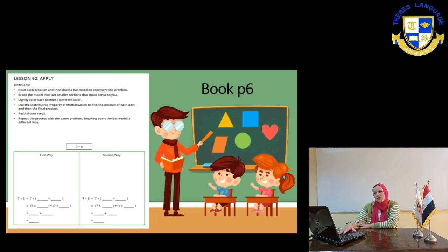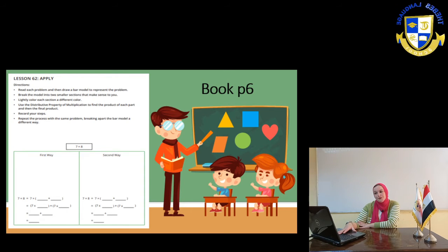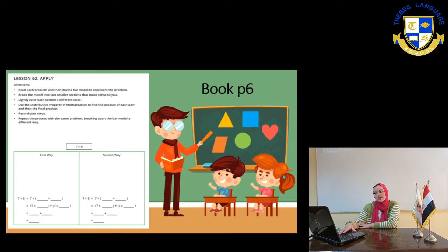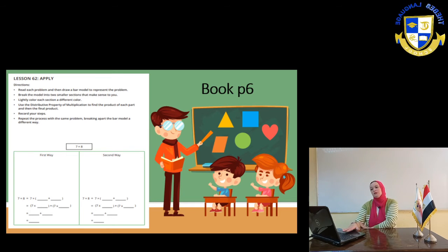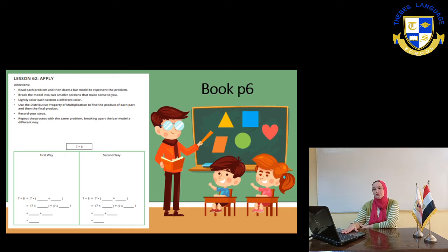Read each problem and then draw a power model to represent the problem. Break the model into two smaller sections that make sense to you. Lightly color each section a different color. Use the distributive property of multiplication to find the product of each part and then the final product. Record your steps. Repeat the process with the same problem, breaking apart the power model a different way.